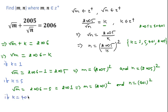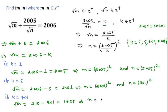If k equal to 401, then square root of m equal to 2006 minus 401, which is equal to 1605. If we square both sides then we get m equal to 1605². And putting k equal to 401, we get n equal to 5² which is 25.